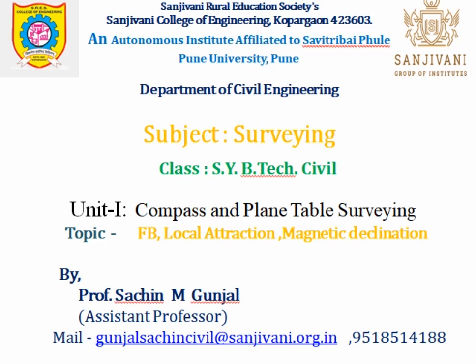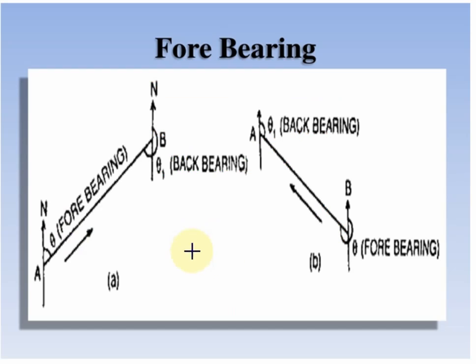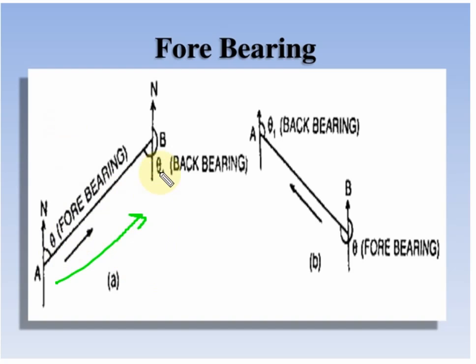Then we see fore bearing and back bearing. Fore bearing is nothing but the bearings which are measured in the direction of progressive survey. So in this direction of progressive survey, the fore bearing of AB is theta.